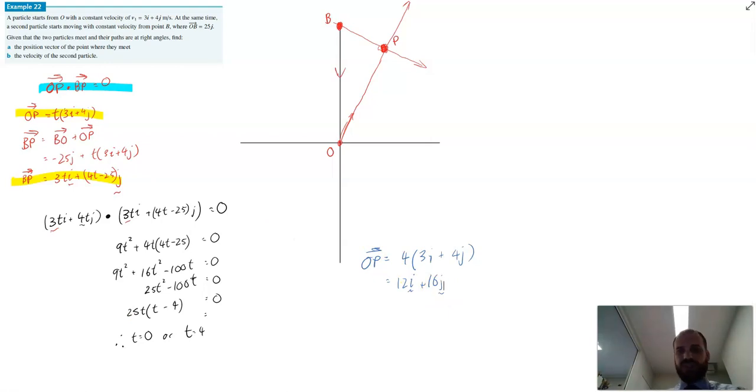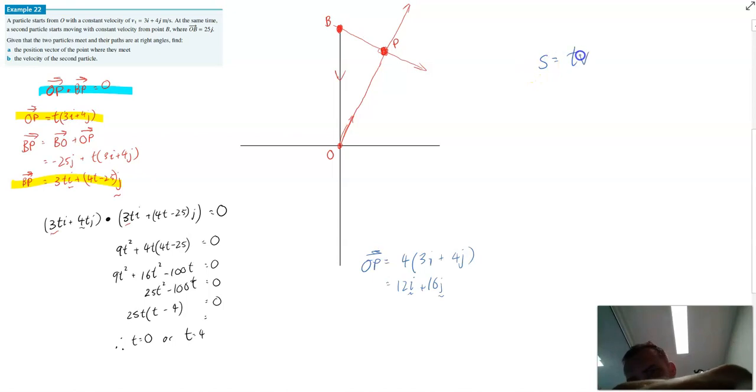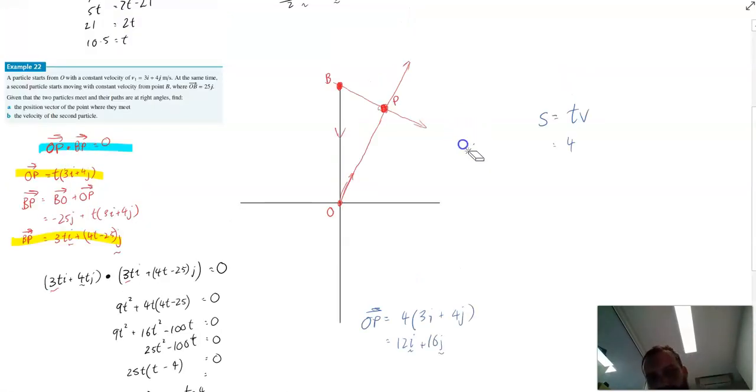Part b, the velocity of the second particle. We need a velocity function for it. Our formula, s equals TV. Now, time is 4 seconds. We know at the 4-second mark that BP is this, but with 4 in for T. So it would be 12i plus bracket 16 minus 25, 12i minus 9j.